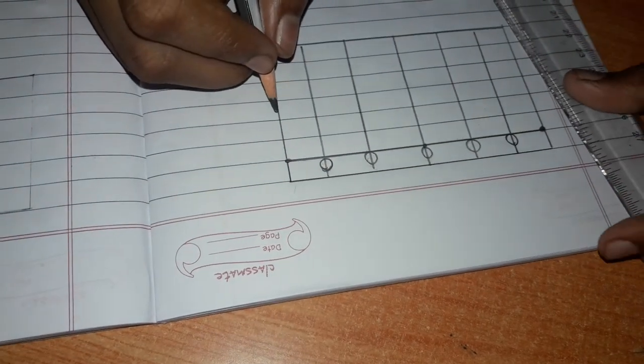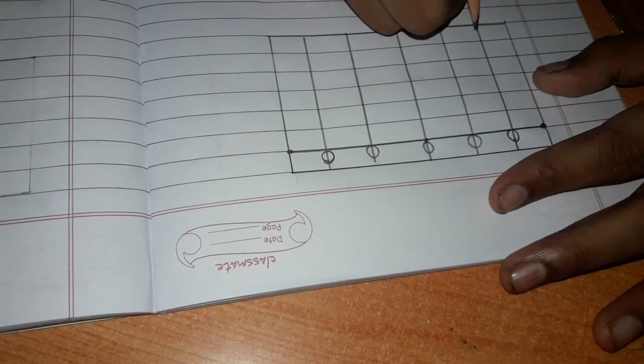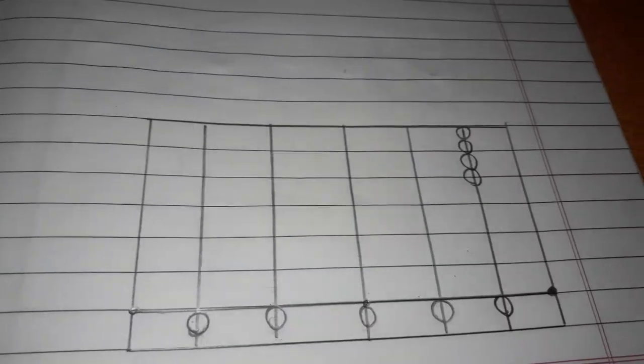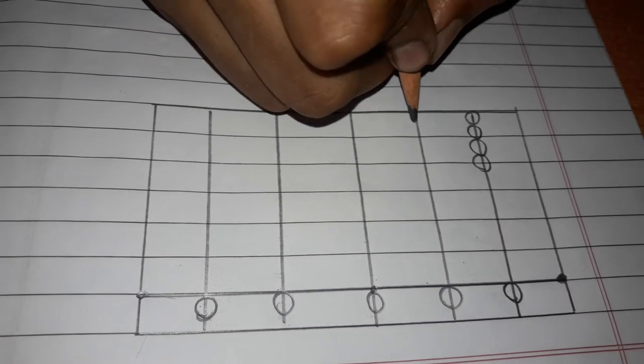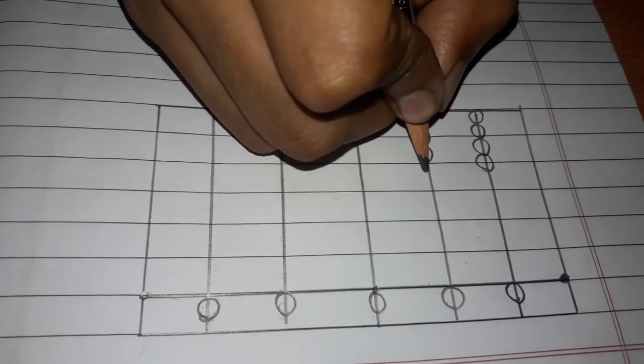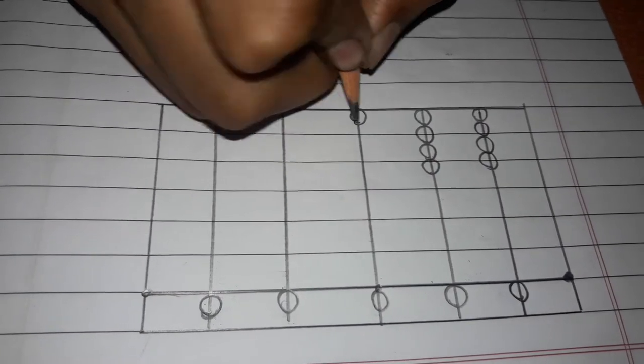After drawing heaven beads, go to earth beads. We have to start earth beads from the bottom and we have to do for each dot like this, without any gaps between each bead.